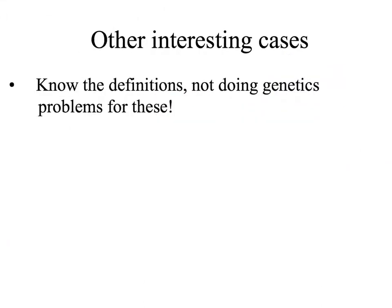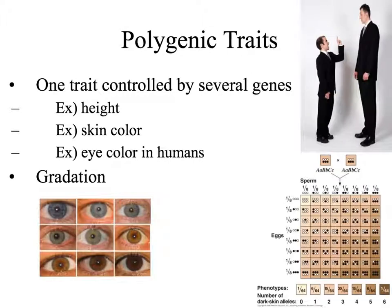Now that we have worked through multiple allelism and sex-linked traits, we are going to look at a few other interesting cases. For these you only need to know the definitions — you do not have to do genetics problems related to these. Our first interesting case is polygenic traits, when one trait is controlled by many genes. Remember, the prefix poly means many. There are many examples of polygenic traits in humans, animals, and other organisms. In humans, height, skin color, and eye color are all polygenic. We know this because if we look at the phenotypes, there is a gradation that occurs.